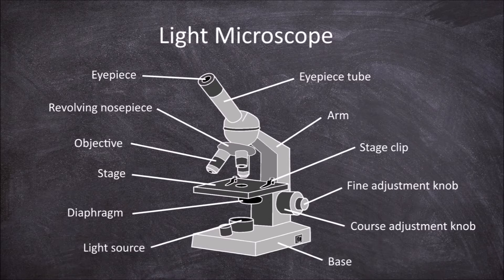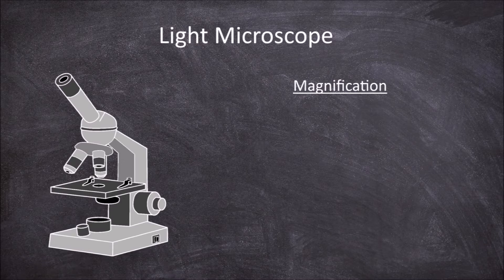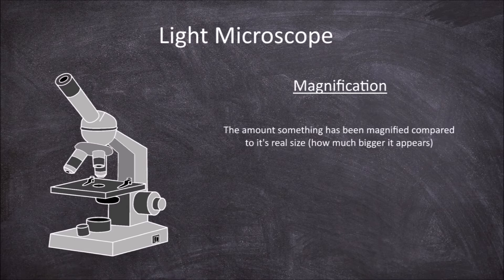How do you work out the magnification of the object you are looking at through the microscope? Magnification is the amount in which something has been magnified compared to its real size, in other words how much bigger it appears.